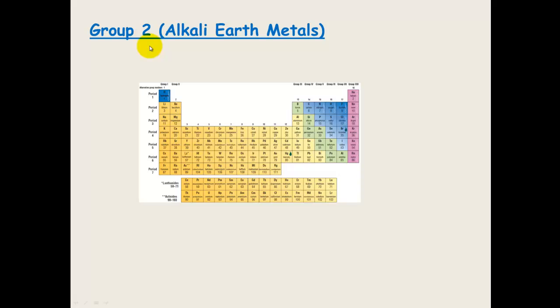The group 2 alkaline earth metals. They have a complete S subshell which has a maximum or it has 2 electrons in it. Beryllium is in the second period. The second or the S subshell has 2 electrons in it. So, it is 2S2. Magnesium is in the third period. It has a 3S2 subshell being filled.